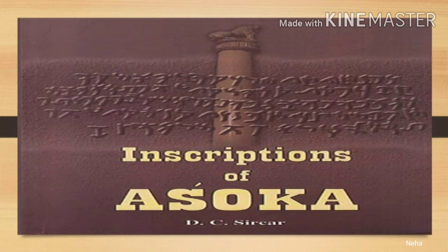The next source is the inscriptions of Ashoka. Inscriptions are the authentic source of information on Ashoka. They tell about the boundaries of Ashoka's empire, as well as his efforts to spread the dharma and the details of the Kalinga battle.